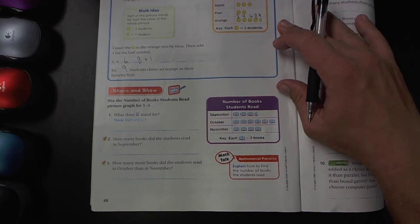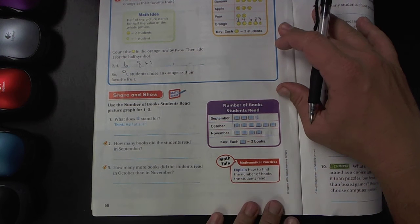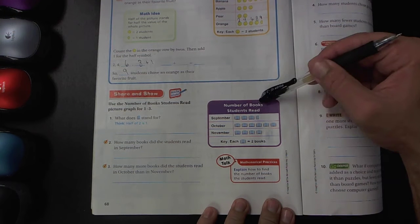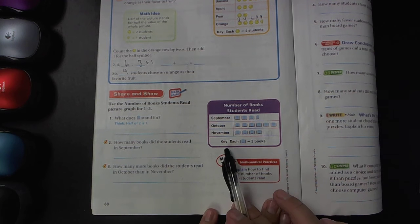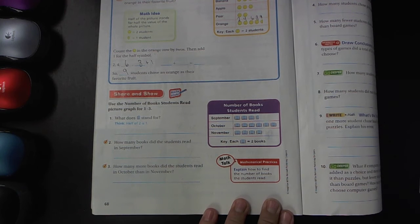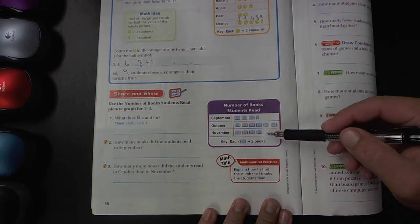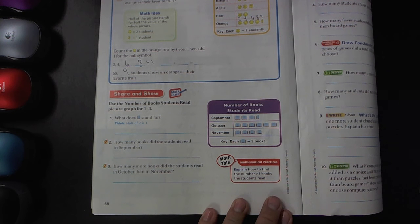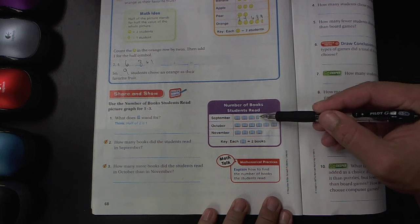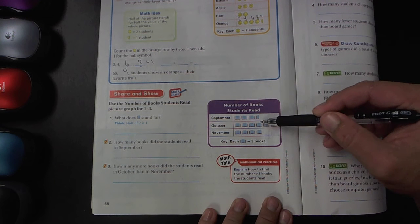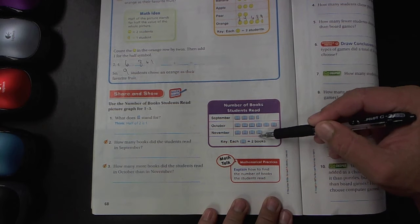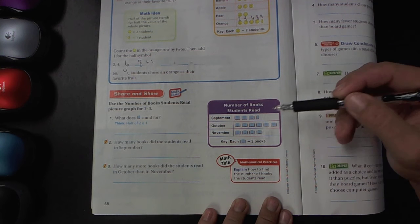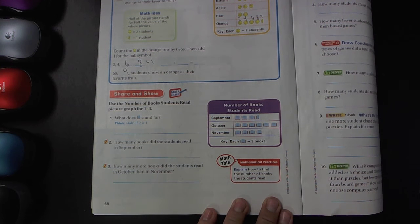We've already done a few in class, but I saved this one on page 68. You can see the picture graph here, number of books students read. You can see the key. And the key is used so that we understand what each picture means. Each one of these is equal to two books. And we also learned in the lesson that when you have half of a picture, it means half of whatever the value of a whole picture means. So because a whole picture means two books, half of a picture means one book.